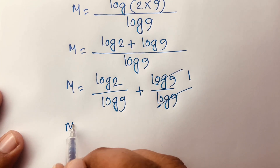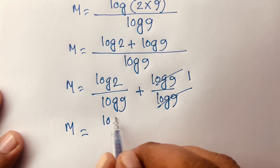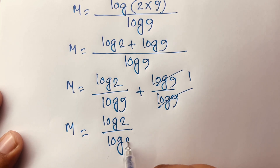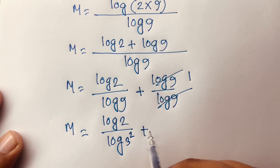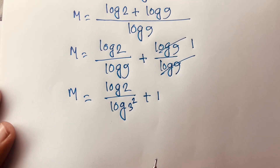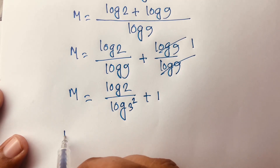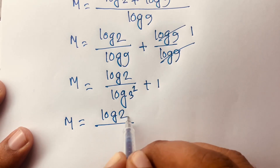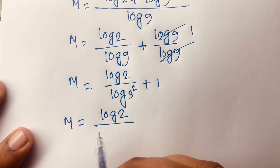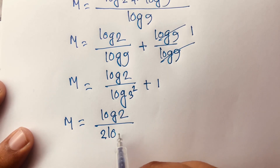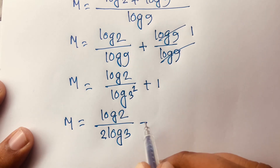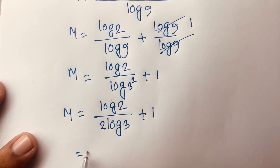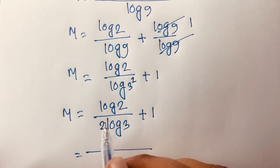Since log 9 equals log 3 squared, which equals 2 log 3, I can write m equals log 2 over 2 log 3, plus 1.